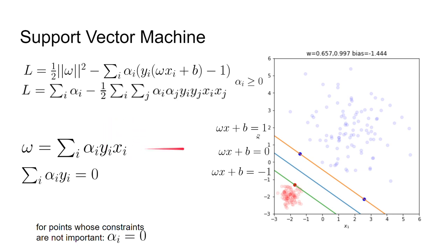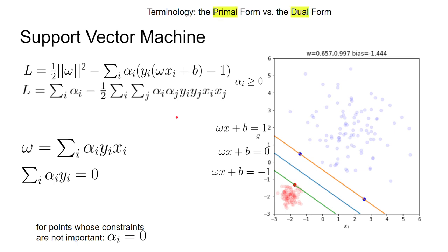That's the setup we had. Once you've got those alphas, you can compute omega by doing a weighted sum: alpha times y_i times x_i. The alpha values are optimized, y_i is plus one for one category and minus one for the other. We also introduced terminology: this second form of the task, rewritten in terms of sums of sums, is called the dual form. We have a primal form and the dual form of the question — they're mathematically identical but useful for different things.